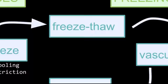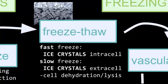The next stage is the freeze-thaw stage. This is where the ice crystals actually start forming in the tissues. If it freezes very fast, the ice crystals form intracellularly, whereas if it freezes slower, the ice crystals are extracellular. Either way, this causes cell dehydration and a lot of lysis and damage.